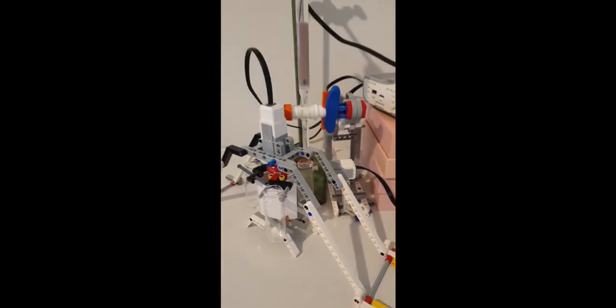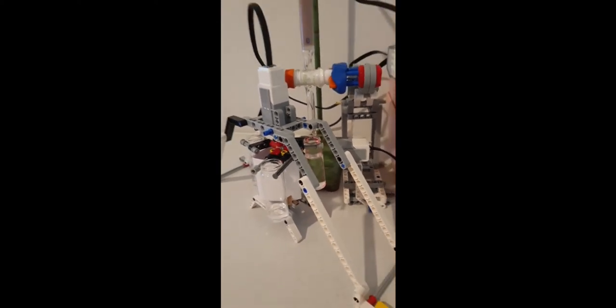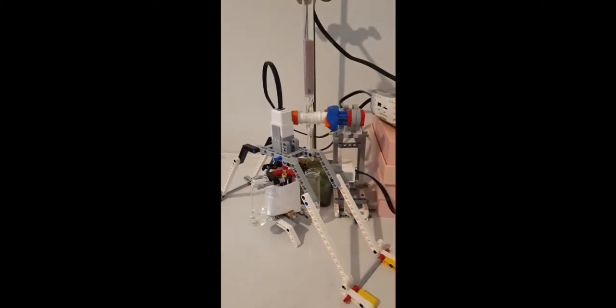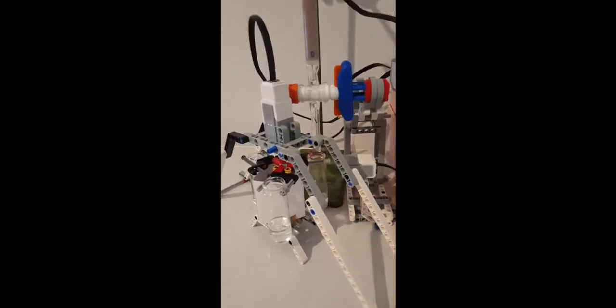As you can see here the liquid that is transferred through the column is collected and after the first vessel is filled the robot has to rotate and put the second vessel into place so that the column can be opened again.